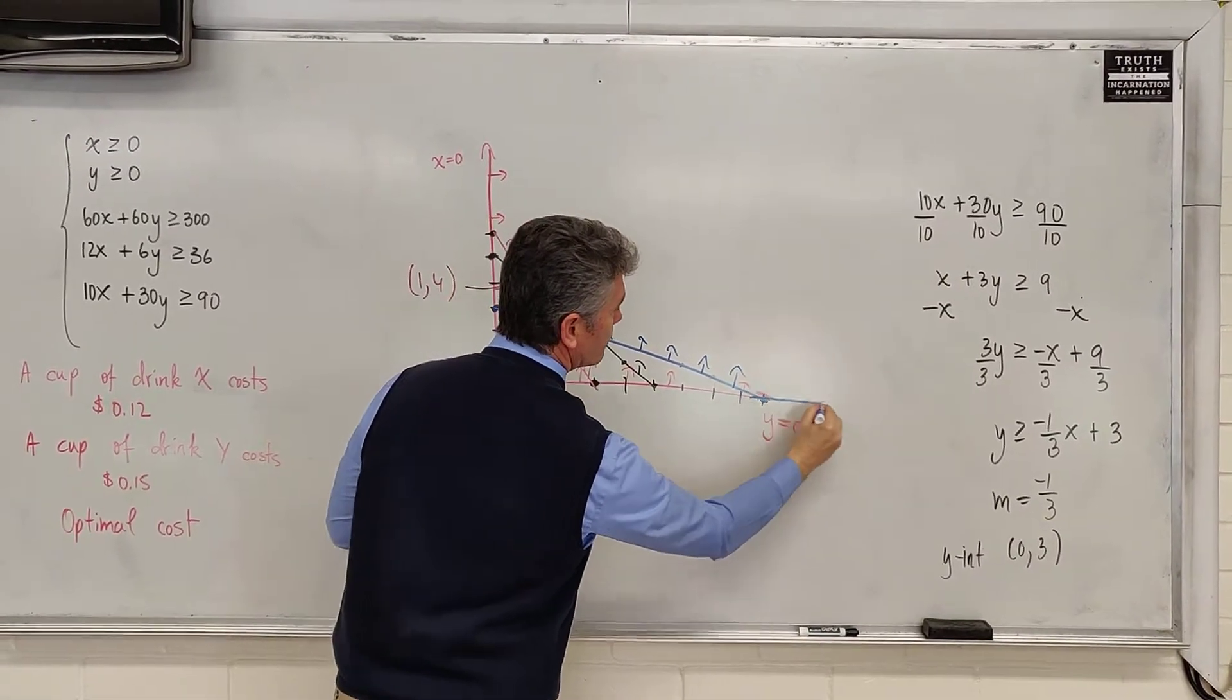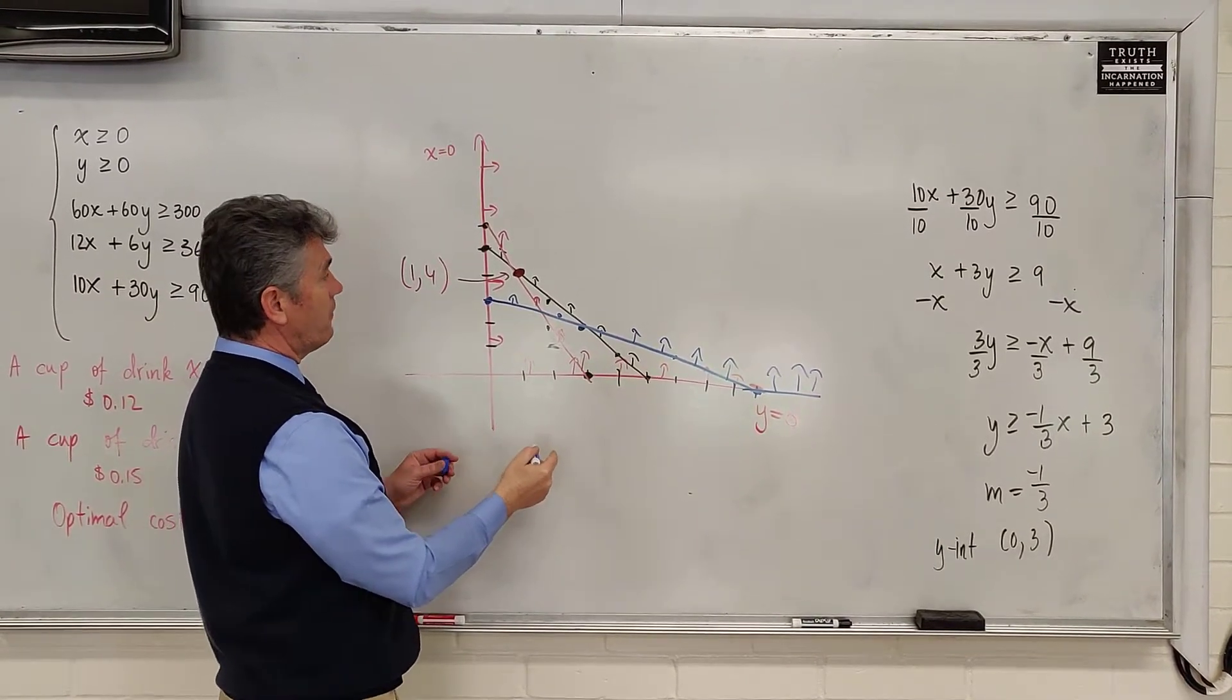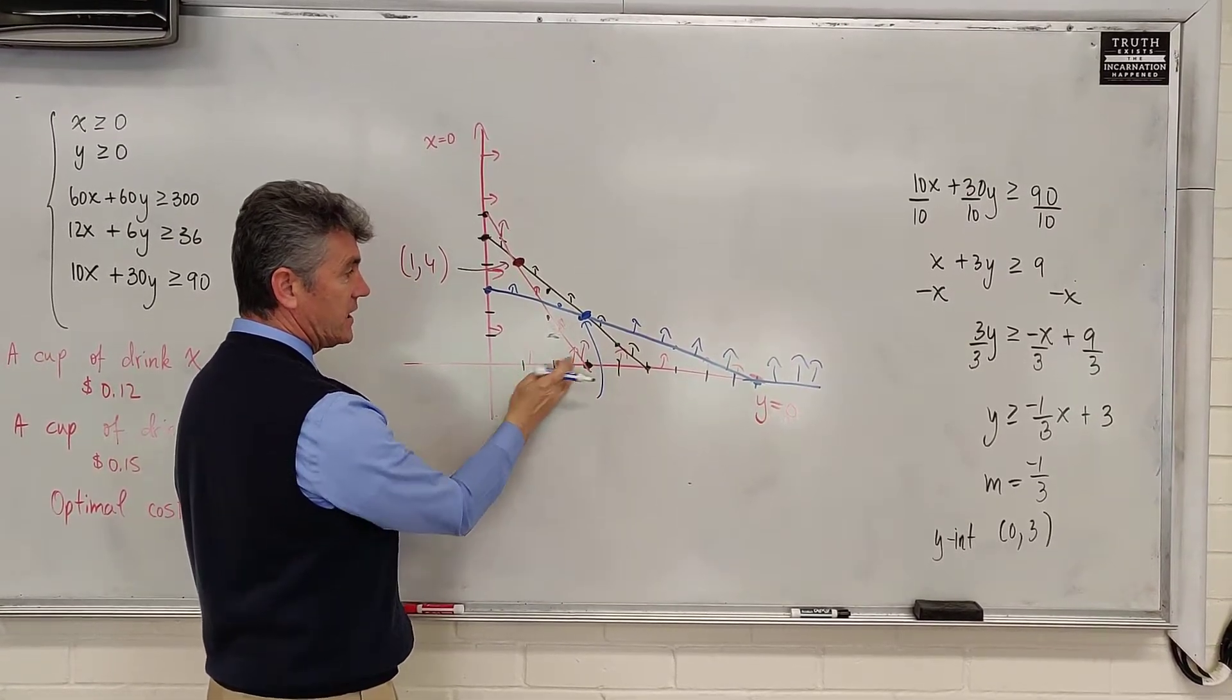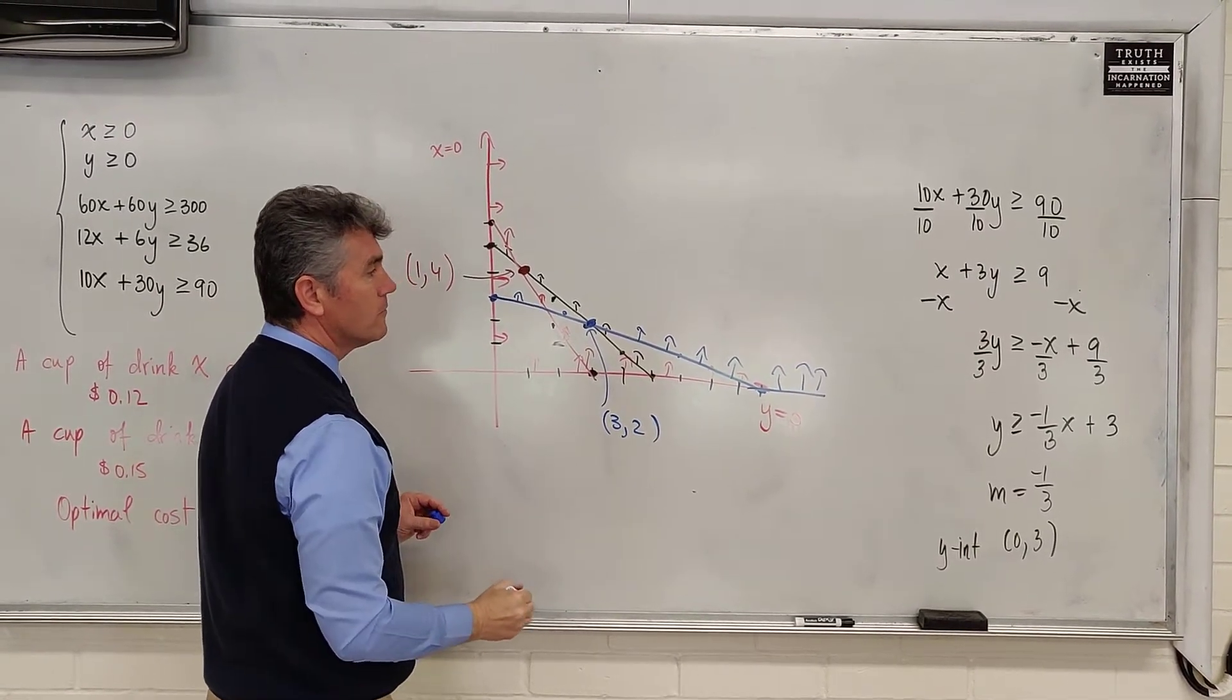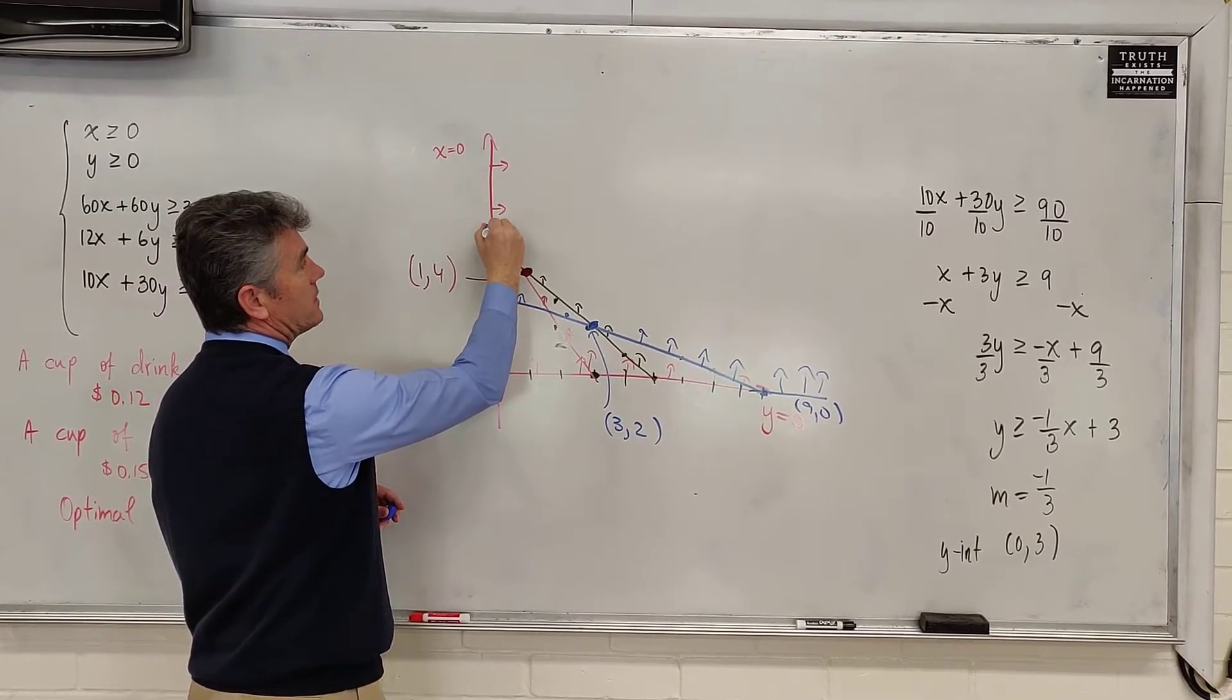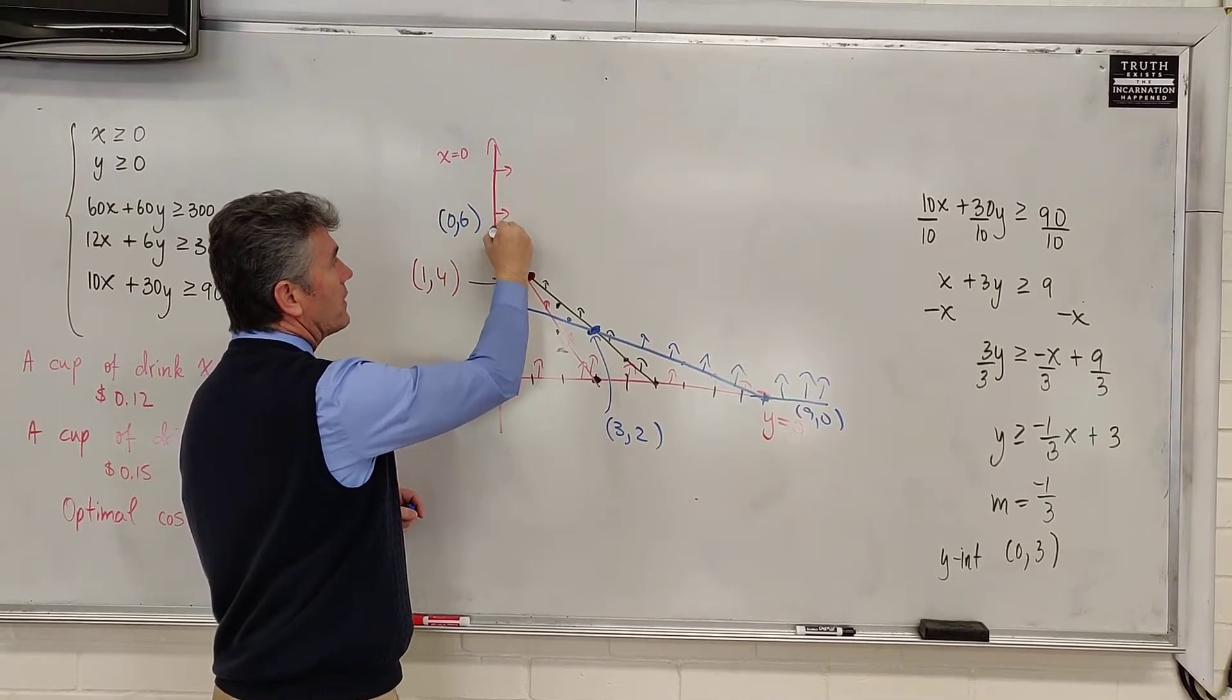Our goal now is to figure out the vertices. Because I graphed carefully, one vertex is 1 comma 4. The other vertex is this point of intersection. Right here, I notice it is 3 to the right and 2 up. So, 3 comma 2. Another vertex of this region is the point 9 comma 0. And finally, the last vertex of this region is the point 0 comma 6.